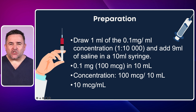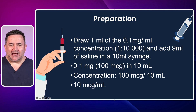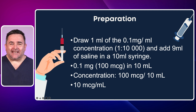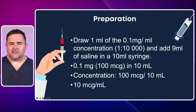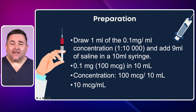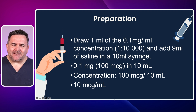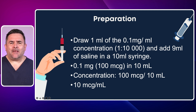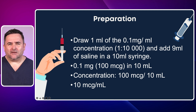Take a 10ml syringe and draw up 1ml of the 0.1mg per ml epinephrine, also known as 1 in 10,000, and add 9ml of normal saline. This will give you 0.1mg or 100mcg in 10ml, which equals 10mcg per ml.